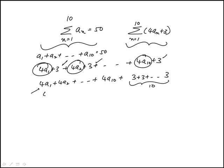Here if I factor 4, I get a1 plus a2 all the way to a10, and then this is 30.